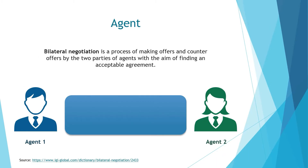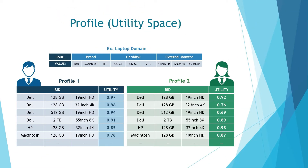In ANAC 2021, the negotiation type is selected as bilateral, which means there will be two parties of agents that negotiate with each other. Another component is the profile. A profile defines the preference of agents. In ANAC 2021, the profile type is selected as utility space, which defines the utility values of an agent for each possible bid. For example, consider agent one — profile one is assigned to agent one, and according to profile one the agent has a utility value of 0.97 for the first bid.